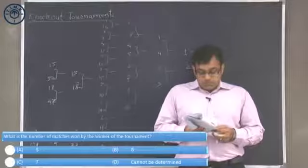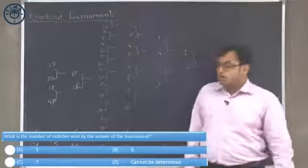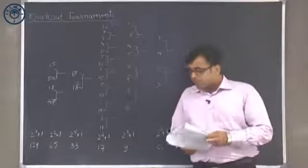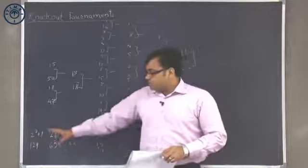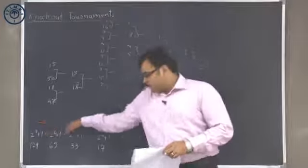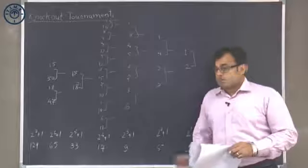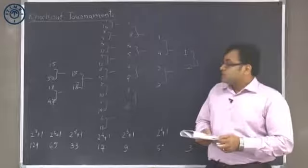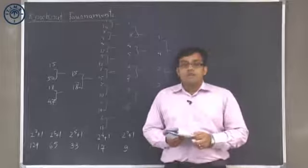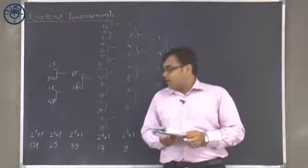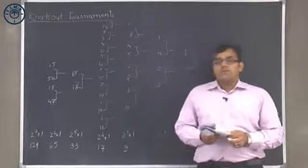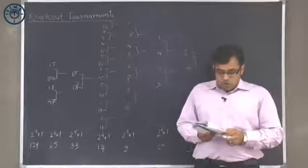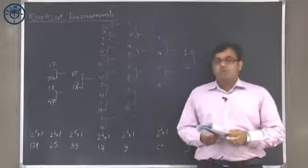Question 2: what is the number of matches won by the winner of the tournament? As far as the number of matches won by the winner of the tournament is concerned, if we assume that the winner is one of the persons who has been playing from the first round, then he will have played an overall 7 rounds, because for every round, he will have to play one match. However, in case the winner of the tournament is one of the players from player seeded 1 to 8, then he will not have to play in the first round. And if he does not have to play in the first round, then he can be the winner of the tournament, even if he has played just 6 rounds. So, 6 or 7, any of the two possibilities is there, answer would be cannot be determined.